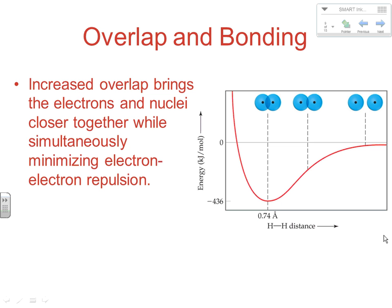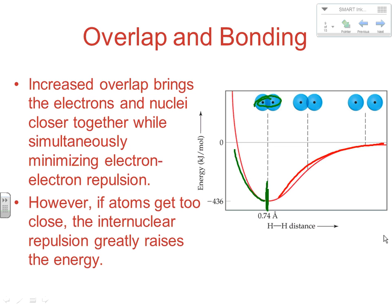Increased overlap brings the electrons and nuclei closer together, which decreases potential energy. Those strong attractions lower potential energy as atoms approach, but there is also a slight increase in electron-to-electron repulsion. The energy advantage from attraction forces is significantly greater than the electron repulsion — until we reach a point where the electron-electron repulsion becomes so strong that moving closer together becomes an energy disadvantage. That defines the bond distance. If the atoms get too close, the internuclear repulsion becomes very large and is an energy disadvantage.